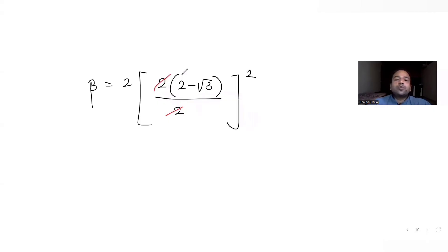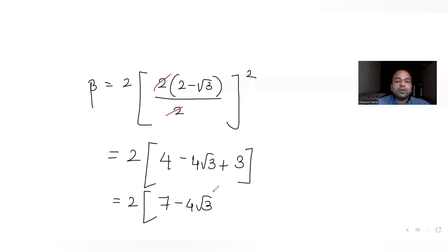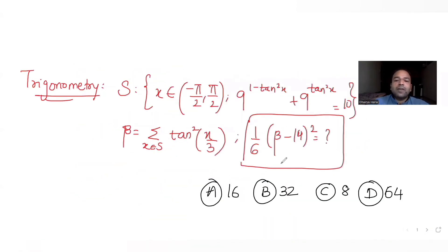With tan(15°) = 2 - √3, we compute β = 2·(2 - √3)². Expanding: (2 - √3)² = 4 - 4√3 + 3 = 7 - 4√3. Therefore β = 2·(7 - 4√3) = 14 - 8√3.